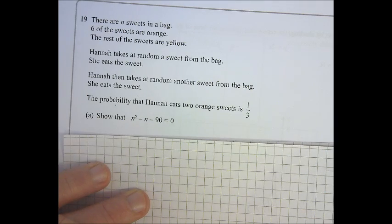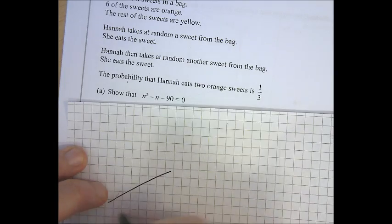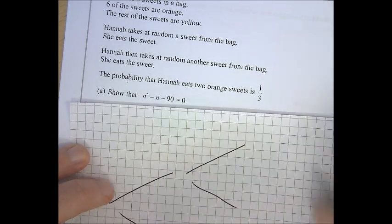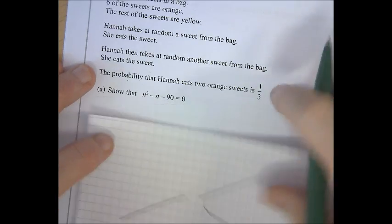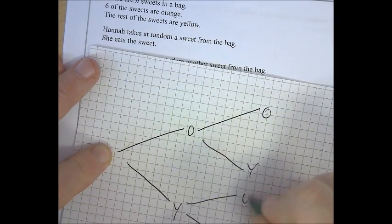The options appear to be orange and yellow, and that's all there is. So it's probably just going to be the classic double forking situation. And we've got orange, yellow, orange, yellow, orange, yellow.